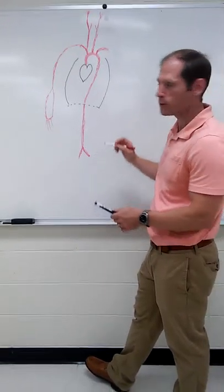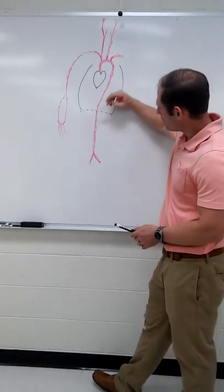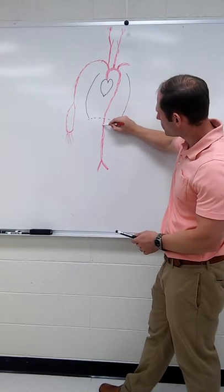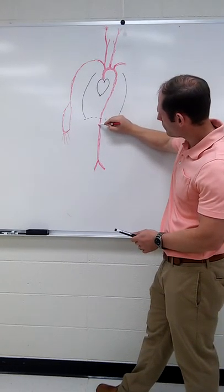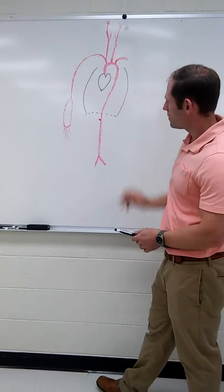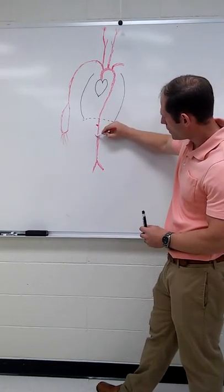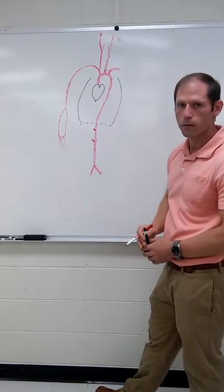be to scale. This person's gonna have super small legs. So this is where it gets kind of messy and this is where people get really confused. So the first anterior branch off the abdominal aorta, that's going to be your celiac trunk. The next anterior branch, superior mesenteric.